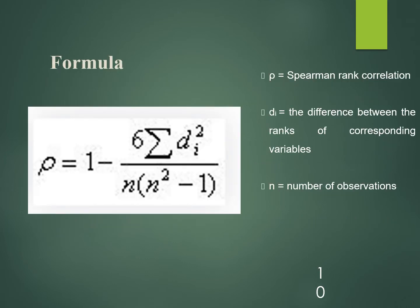The formula used is: rho = 1 minus (6 multiplied by the summation of d_i squared) divided by n(n squared minus 1), which in the denominator gives n cubed minus n. Here, rho represents the Spearman rank correlation, d_i represents the difference between the ranks of corresponding variables, and n represents the number of observations.